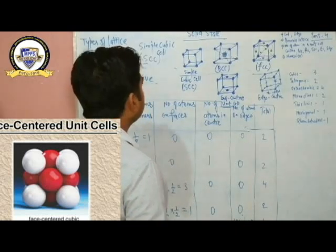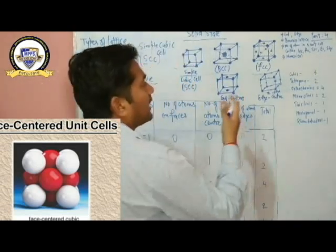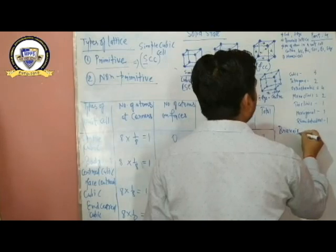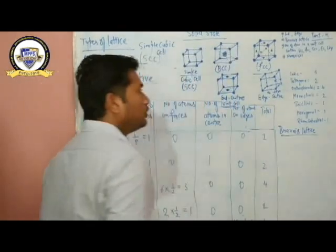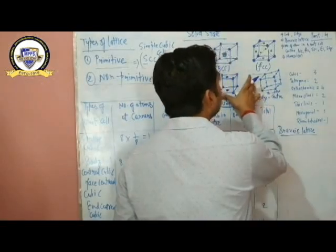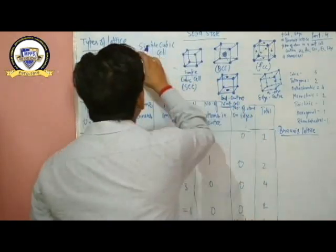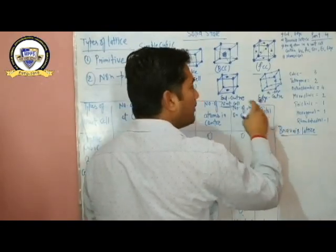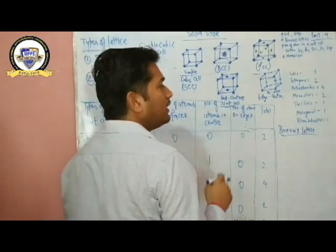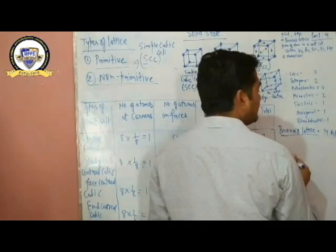Edge-centered is also a non-primitive type of cubic cell. Moving on, another important term is Bravais Lattice. There are only 7 types of crystal structures present. But all 4 unit cell types are not present in every crystal system — only the primitive is present in all. That means only 14 types of crystal systems occur.